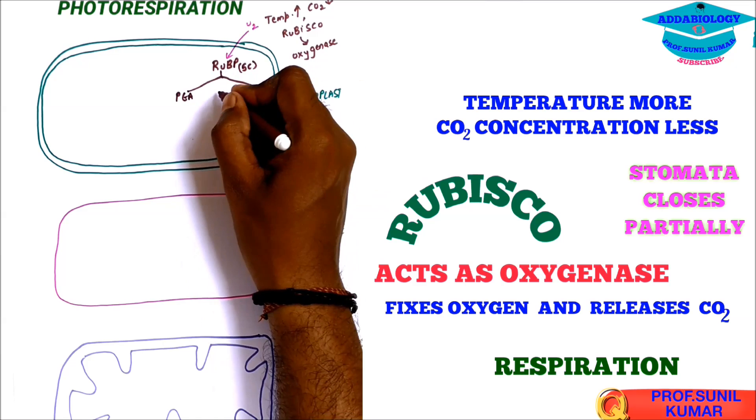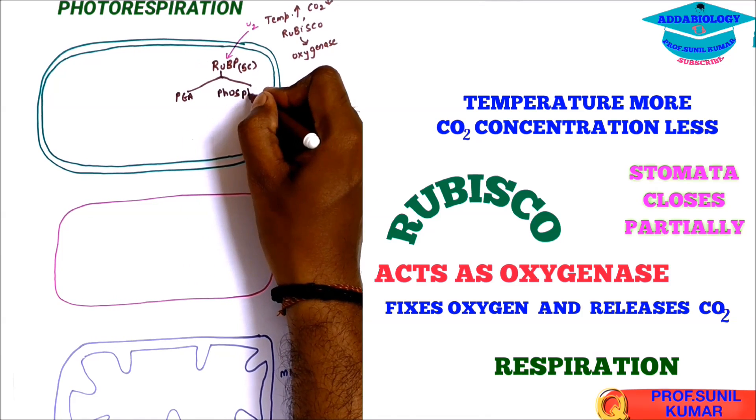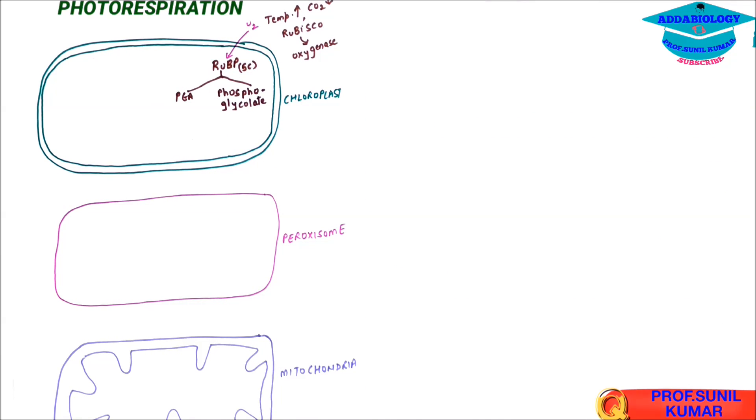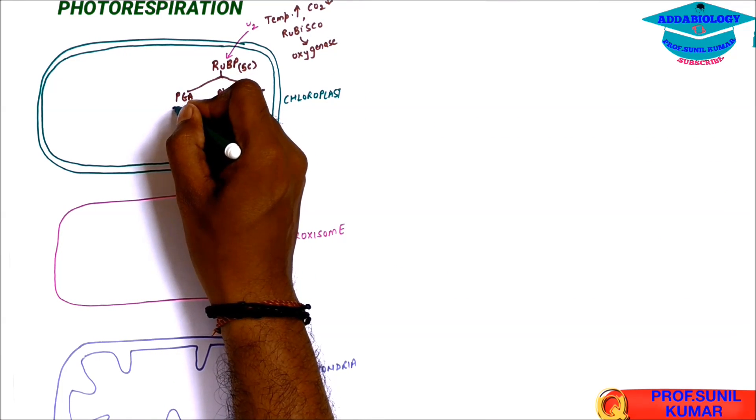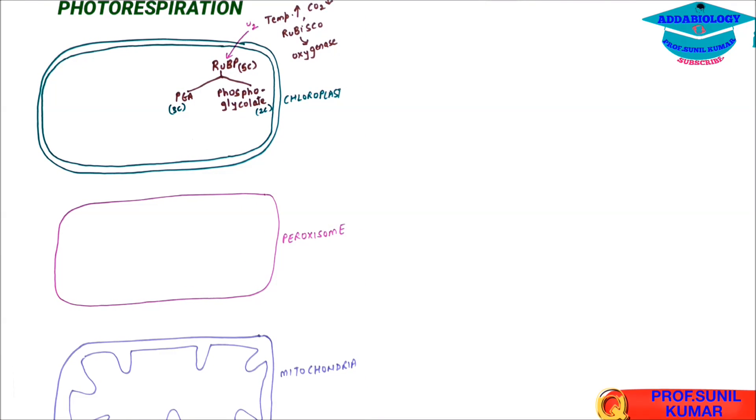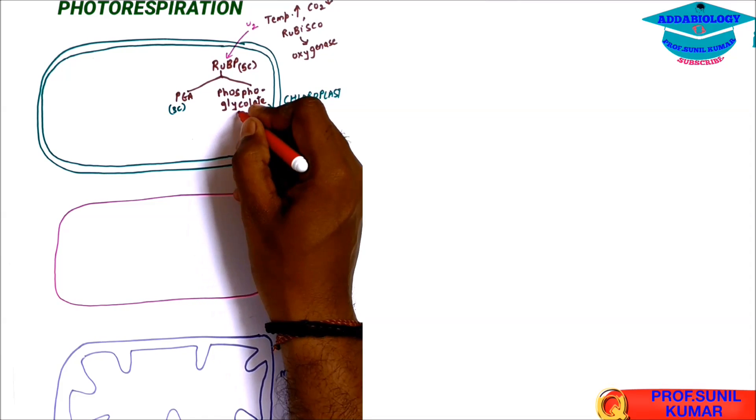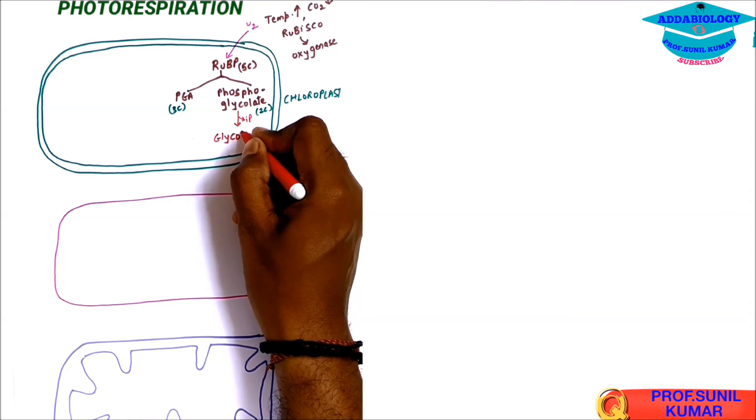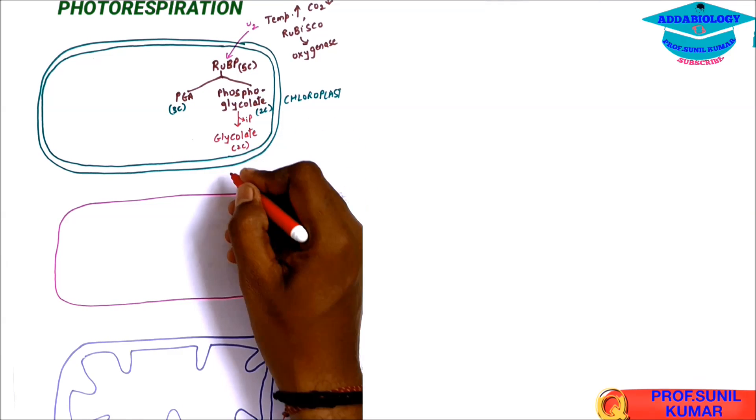So PGA and phosphoglycolate. Remember the word phosphoglycolate. Now PGA will be three carbon compound and phosphoglycolate is two carbon compound. From phosphoglycolate, keep this word in mind, phosphate is lost. So what is left? Glycolate which is two carbon.